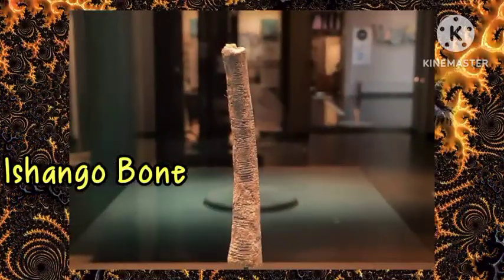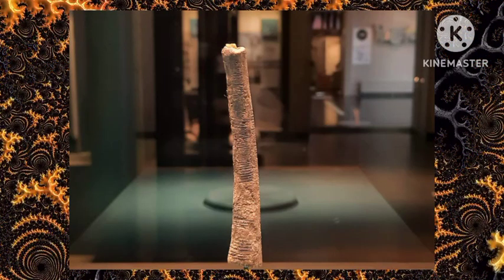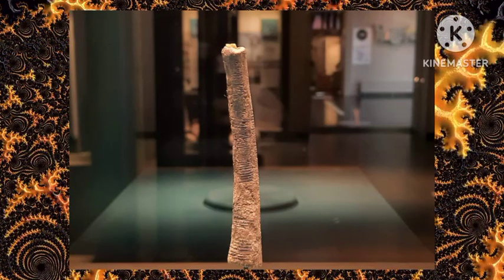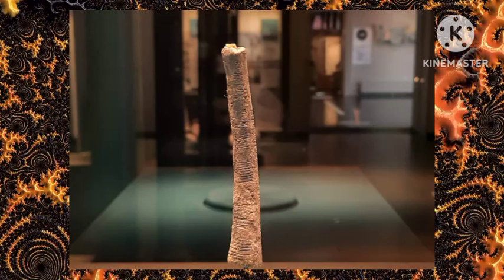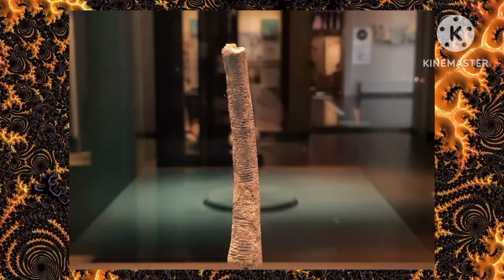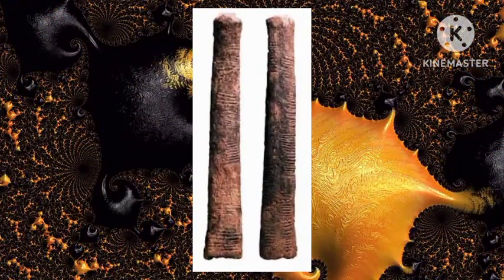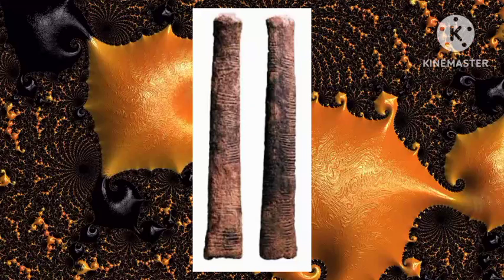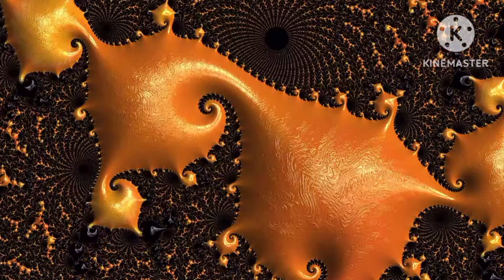Now I'm already super excited about this Ishango bone. Just picture this: a baboon tibia about 10 centimeters long with all these notches carved into it. And get this, this bone is from around 20,000 BC. I know it's incredible, but what's even more amazing is that the notches on the Ishango bone, which was found in the Democratic Republic of Congo, seem to represent prime numbers.